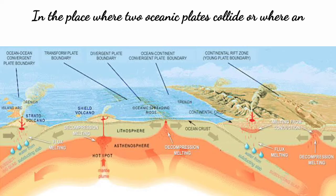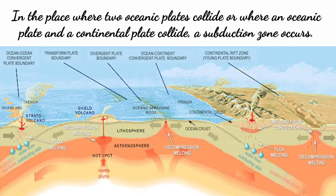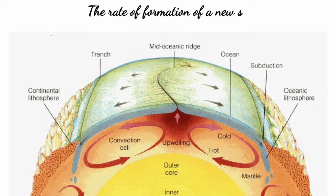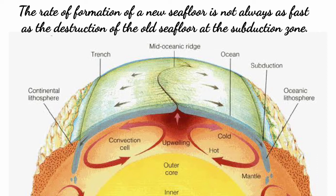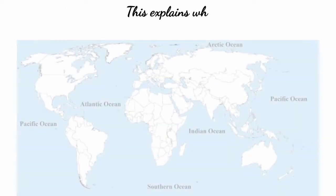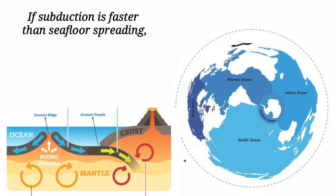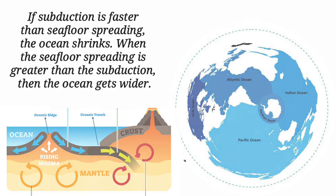In the place where two oceanic plates collide, or where an oceanic plate and a continental plate collide, a subduction zone occurs. The rate of formation of new seafloor is not always as fast as the destruction of the old seafloor at the subduction zone. This explains why the Pacific Ocean is getting smaller and the Atlantic Ocean is getting wider. If subduction is faster than seafloor spreading, the ocean shrinks. When seafloor spreading is greater than subduction, the ocean gets wider.